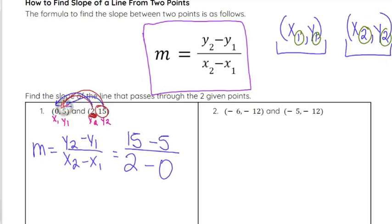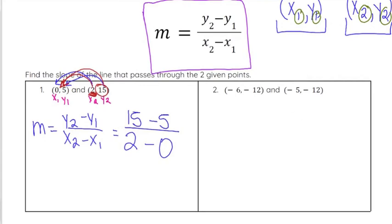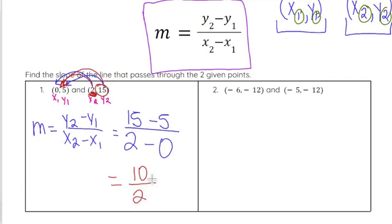So 2 minus 0 on the bottom. You always have to start with the same ordered pair — if you started with 15 minus 5 on top, you couldn't do 0 minus 2 on the bottom; the signs would be incorrect. So 15 minus 5 is 10, over 2 minus 0, which is 2. Then 10 divided by 2 is 5. So our slope on this one is 5.